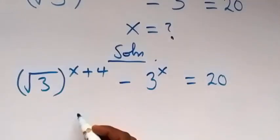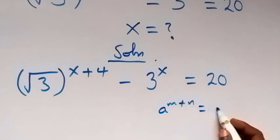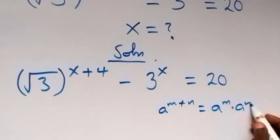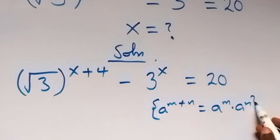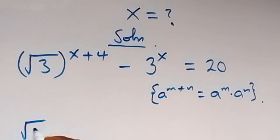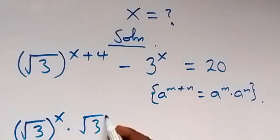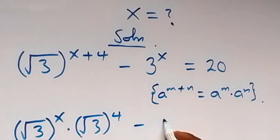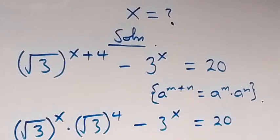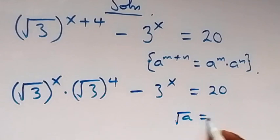Now, applying this law of indices, where we have a raised to the power n plus n, we can write this as a raised to power n times a raised to power n. From here, this can be written as root 3 raised to power x, times root 3 raised to power 4, minus 3 raised to power x, which equals 20. We can also write root 3 as a raised to power 1.